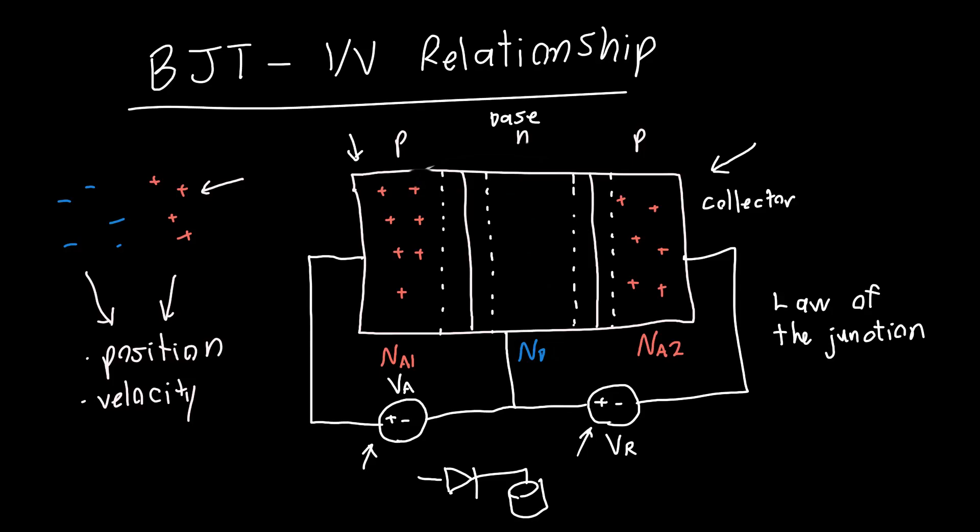So we want to know what the hole distribution looks like in the emitter side. So this is the emitter because it's emitting holes. We want to know what the distribution looks like in the emitter, in the base and in the collector. Well, if we assume that this doping concentration Na1 and this doping concentration Na2 are large. In other words, if the number of holes that we're going to be sending across this junction is small relative to the initial doping, then we can assume that the carrier distribution doesn't change much in the emitter or the collector region.